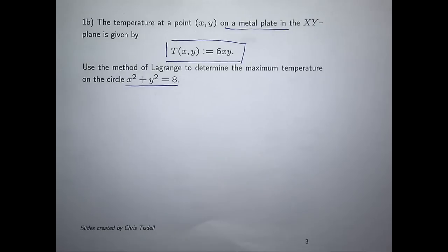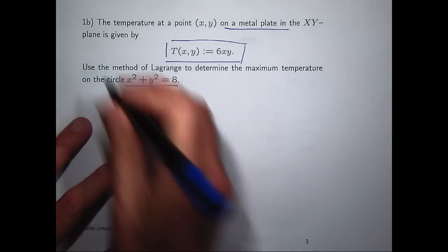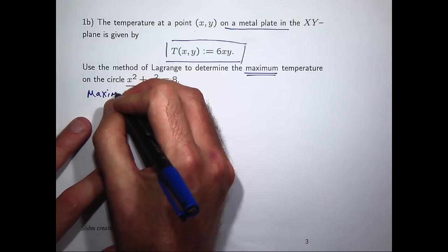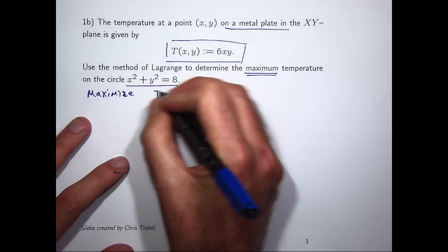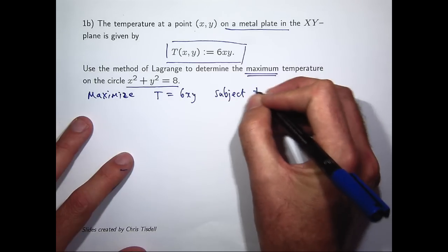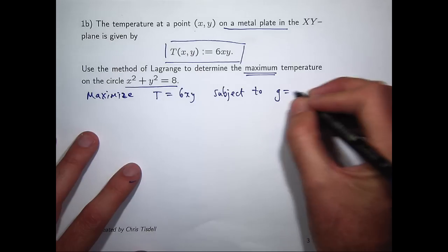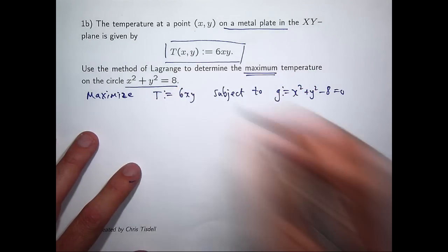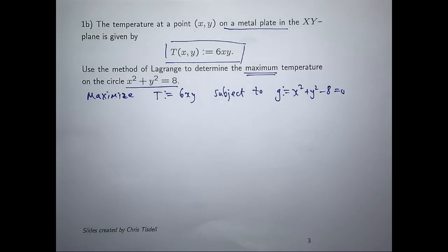So let's work through that step by step. There's a definite method with these kinds of Lagrange max-min type problems. The aim is to maximize T subject to the constraint.